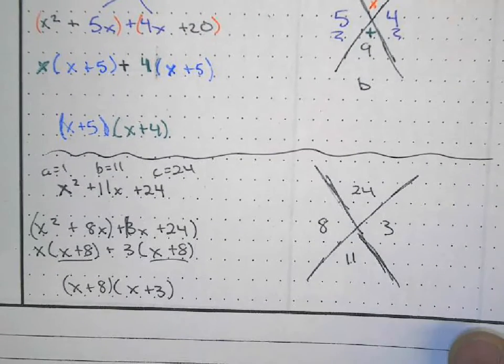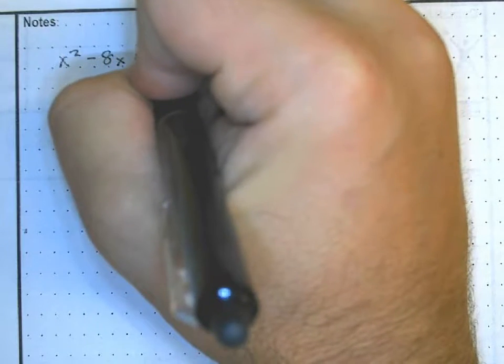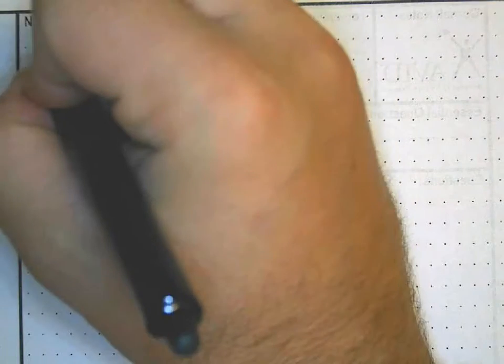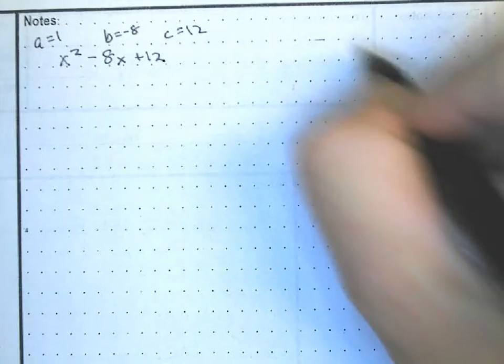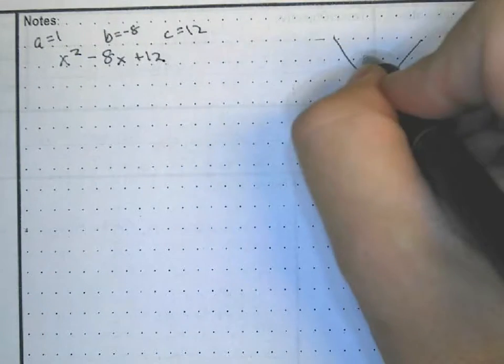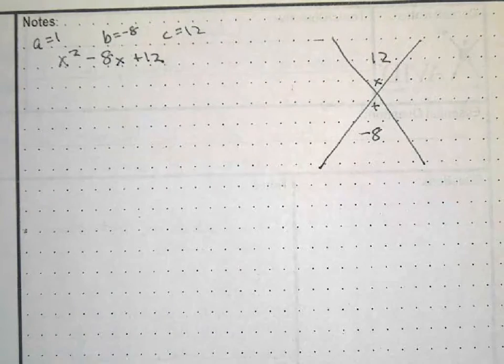Let's do a couple more examples. Try one like this: x² − 8x + 12. Using the AC method, a equals one, b equals negative eight, c equals 12. So 1 times 12 is 12, b is negative 8 — we need two numbers that multiply to 12 and add to negative 8.